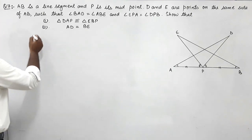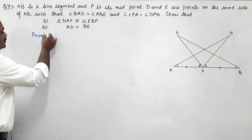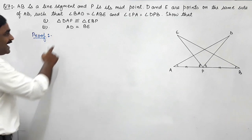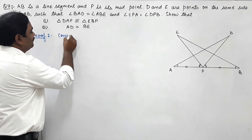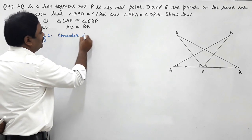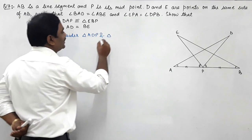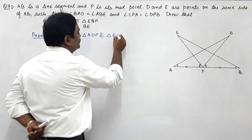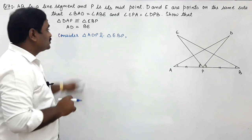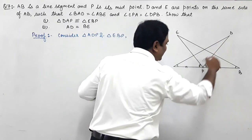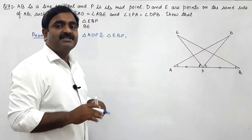Let us see the proof of this question. In the proof, we consider triangle ADP and triangle EBP. These two triangles we are going to compare.